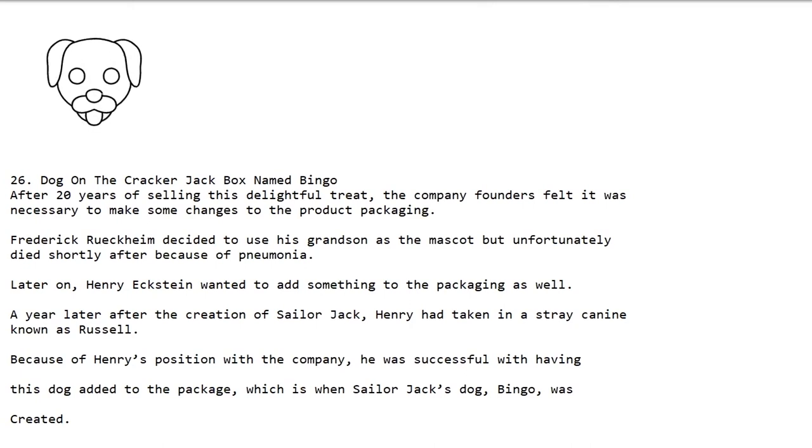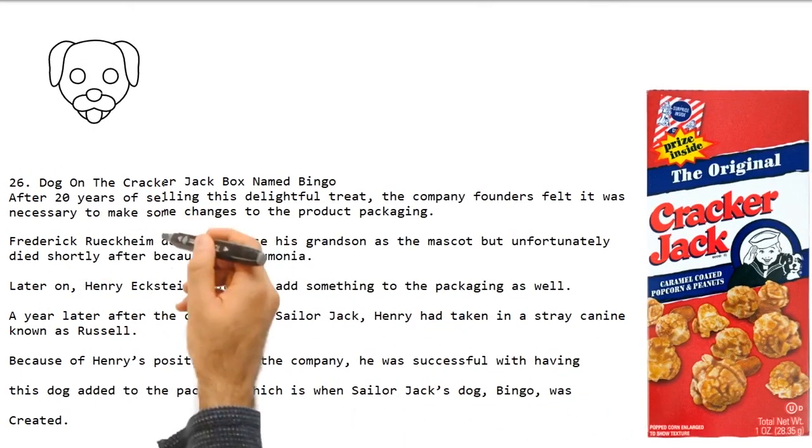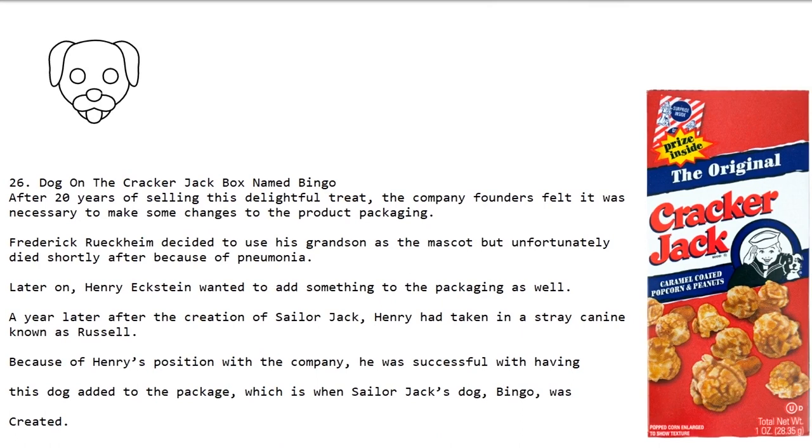26. Dog on the Cracker Jackbox named Bingo. After 20 years of selling this delightful treat, the company founders felt it was necessary to make some changes to the product packaging. Frederick Rookheim decided to use his grandson as the mascot but unfortunately died shortly after because of pneumonia. Later on, Henry Eckstein wanted to add something to the packaging as well. A year later after the creation of Sailor Jack, Henry had taken in a stray canine known as Russell. Because of Henry's position with the company, he was successful with having this dog added to the package, which is when Sailor Jack's dog Bingo was created.